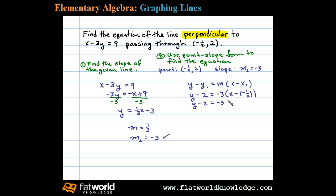Simplifying: y minus 2 equals negative 3 times x plus 1 half. Distributing negative 3: y minus 2 equals negative 3x minus 3 halves. And then finally adding 2 on both sides will have y equals negative 3x minus 3 halves plus 2.